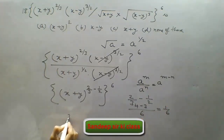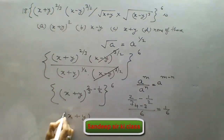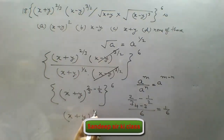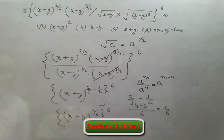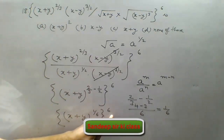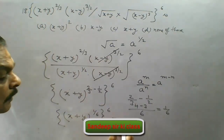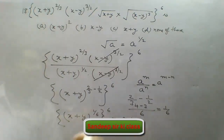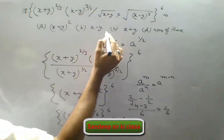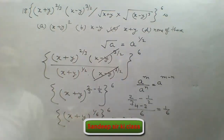So we have x plus y to the power 1 upon 6, and the whole has power 6. Now 1 upon 6 and this 6 will be multiplied, so the power will be 1, and hence we get the value as x plus y. So the final value is x plus y — option C is correct.